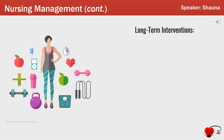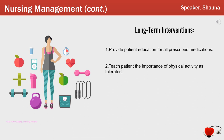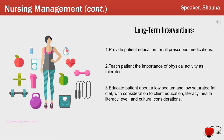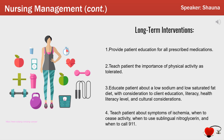Long-term interventions include: Number one, provide patient education for all prescribed medications, including the name, purpose, instructions on how to properly take the medication, and possible side effects. The patient must understand and personally accept the value of the prescribed drug regimen to promote adherence. Number two, teach the patient the importance of physical activity as tolerated, as exercise is beneficial in the prevention of cardiovascular disease. Number three, educate the patient about a low-sodium and low-saturated-fat diet, keeping in mind client education, literacy, health literacy level, and cultural considerations, as reducing risk factors acts as secondary prevention of coronary artery disease. Number four, teach the patient about symptoms of ischemia, when to cease activity, when to use sublingual nitroglycerin, and when to call 911, as patients and significant others need to be prepared to act quickly and decisively to relieve ischemic discomfort.